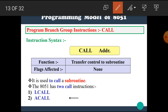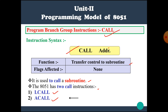The next instruction is the call instruction. The call instruction is used to locate or transfer control towards a subroutine. Its syntax is CALL address, and its function is to transfer control to the subroutine. The 8051 has two call instructions: LCALL (long call) and ACALL (absolute call).